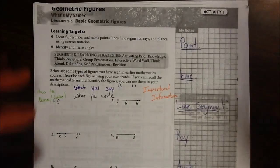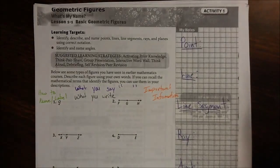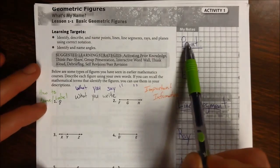And while we do these three things, we always have to use correct notation. And those geometric figures that we're going to be looking at today are points, lines, line segments, rays, and planes.